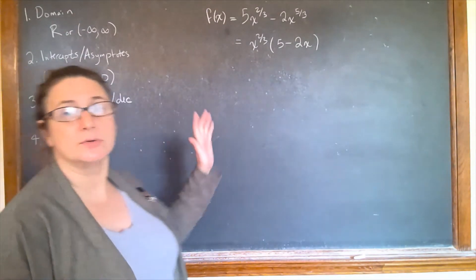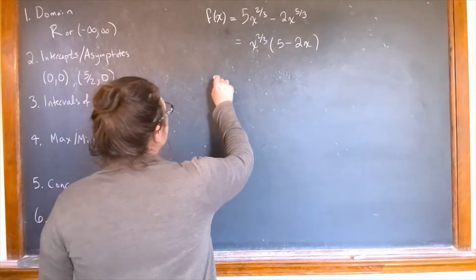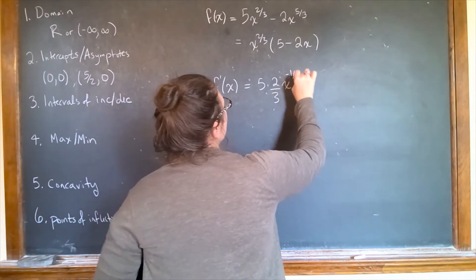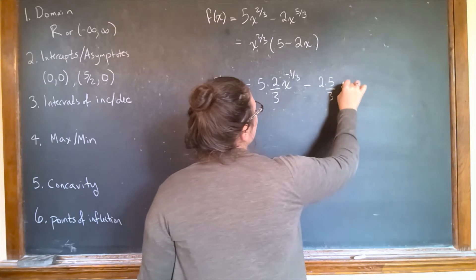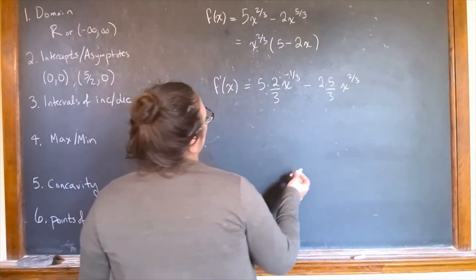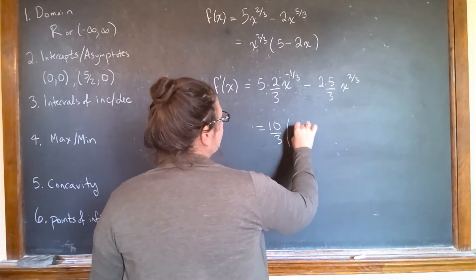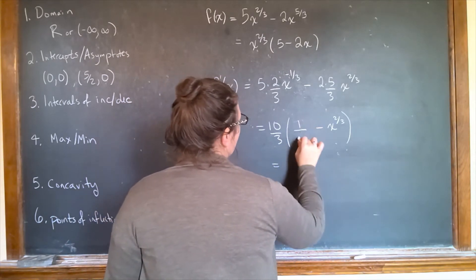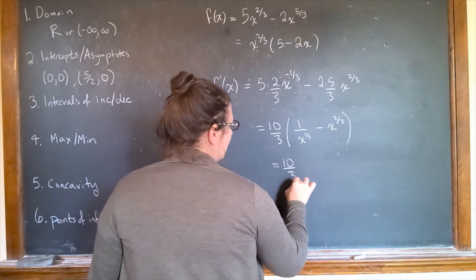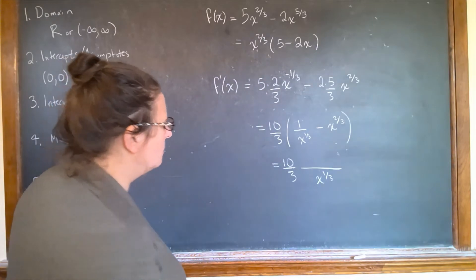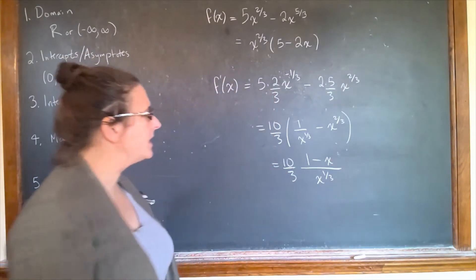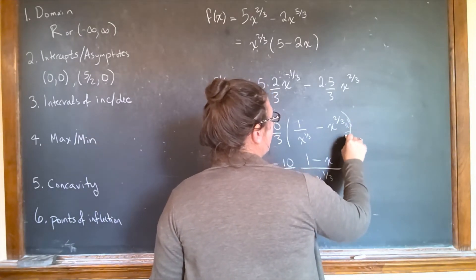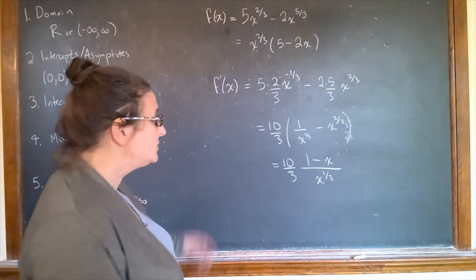Intervals of increase and decrease require taking derivatives. The first derivative is (2/3)(5)x^(-1/3) minus (5/3)(2)x^(2/3), which gives (10/3)x^(-1/3) minus (10/3)x^(2/3). We can rewrite this as a fraction with denominator x^(1/3), multiplying top and bottom by x^(1/3) to get a common denominator, yielding (10/3)(1 - x) / x^(1/3).